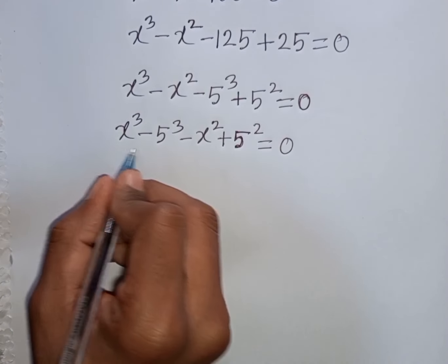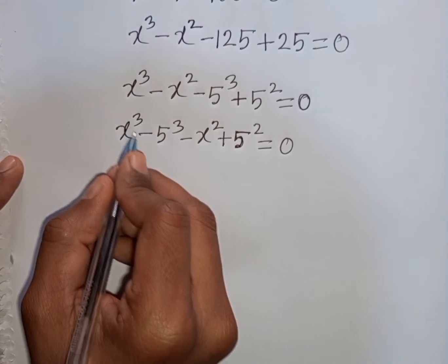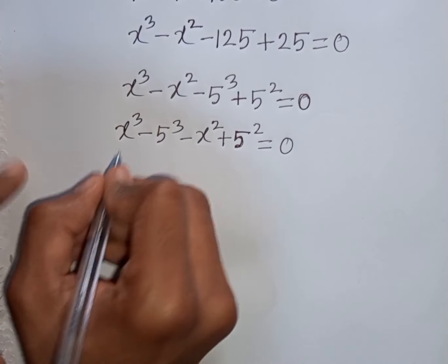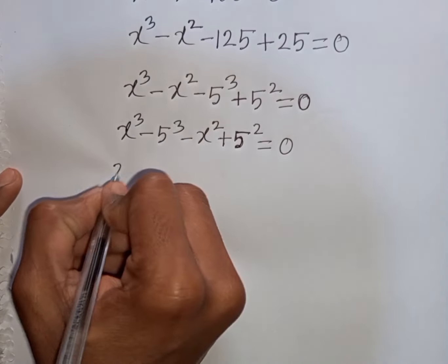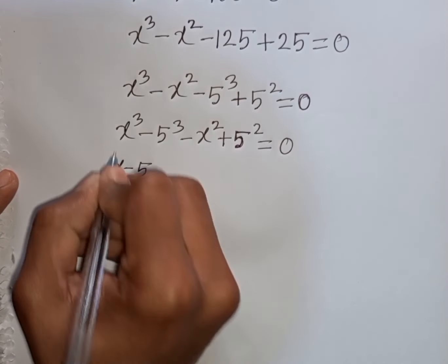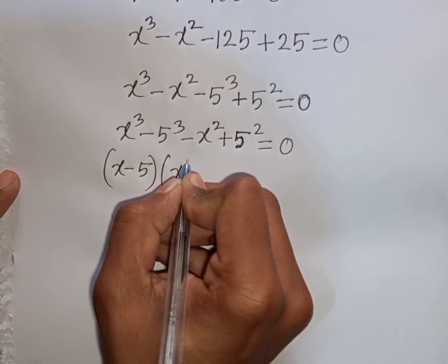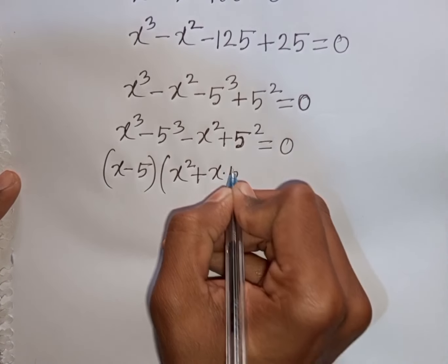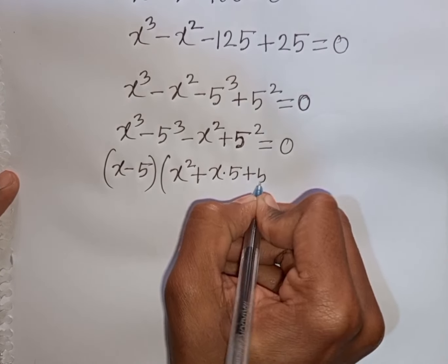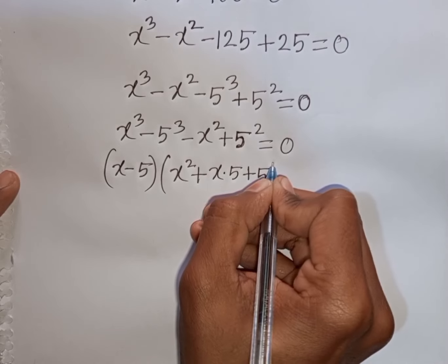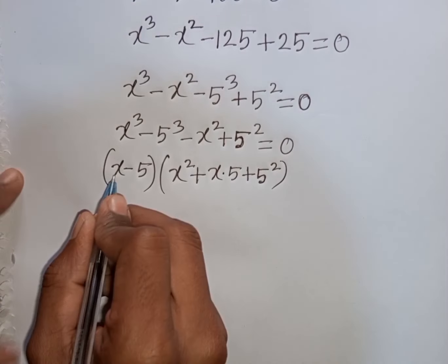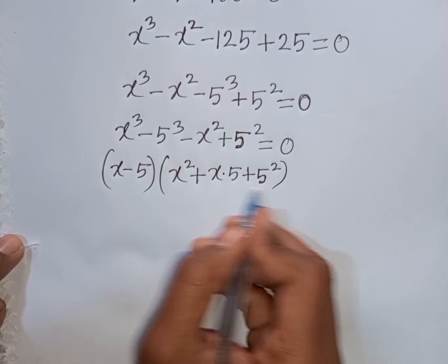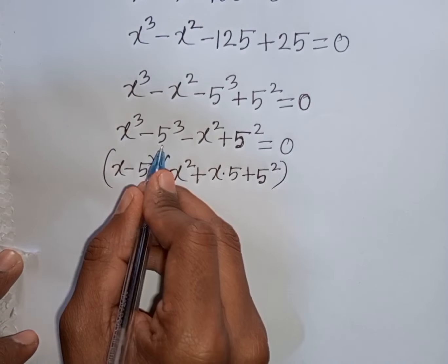Now I can apply the formula of a cubed minus b cubed. Here a is x and b is 5. So, according to the formula, I can write: x minus 5, times x squared plus x times 5 plus 5 squared. That means a minus b times a squared plus ab plus b squared — this is the formula of a cubed minus b cubed.